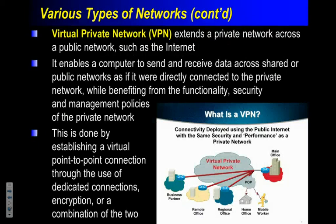The virtual private network — VPN — extends a private network across a public network. This enables computers to send and receive data across shared public networks like the internet as if they were directly connected to that private network. It works by creating specific access points to the network using a security system. For the IB, you just need a general overview of this terminology.